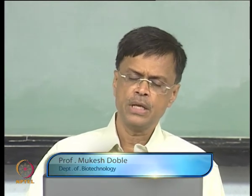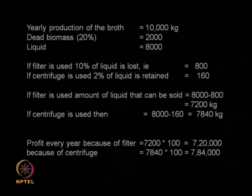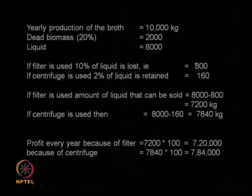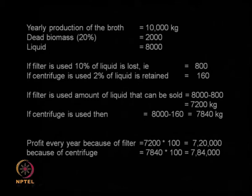In the previous class, I introduced net present value and cash flow, and gave an example of how to use this concept in making a decision. It was related to a filter and a centrifuge. You can use a filter or a centrifuge for removing solids. A centrifuge is advantageous because it retains less liquid, whereas a filter retains more. So if liquid is your desired product, using a filter means you lose 800 kg of liquid and using a centrifuge you lose 160 kg. The annual profit from a filter is 7.2 lakhs and from a centrifuge is 7.84 lakhs.